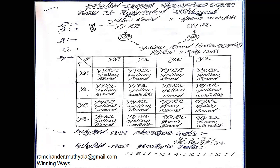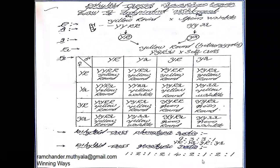The F1 generation heterozygotic plants are expressed with yellow color cotyledons and round seeds. These heterozygotic F1 plants are crossed with self-cross to form the F2 generation. In the F2 generation, the dihybrid cross phenotypic ratio is 9:3:3:1 and the genotypic ratio is 1:2:1:2:4:2:1:2:1.